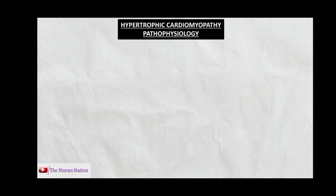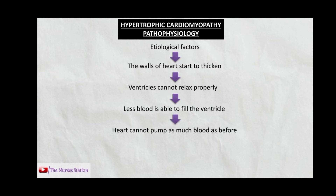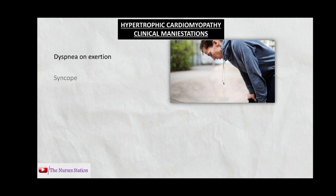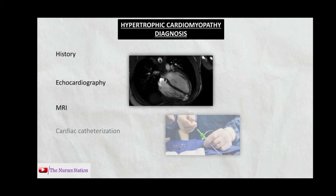Pathophysiology of hypertrophic cardiomyopathy: the walls of the heart thicken, decreasing the ventricle's ability to relax properly. When the ventricle cannot relax, less blood fills it, and during systole less blood leaves, decreasing cardiac output. In some cases the aortic valve may get obstructed due to asymmetric hypertrophy. Clinical manifestations include dyspnea on exertion, fainting or syncope, arrhythmias, fatigue, and angina. Diagnosis is based on history, echocardiography, MRI, and cardiac catheterization.